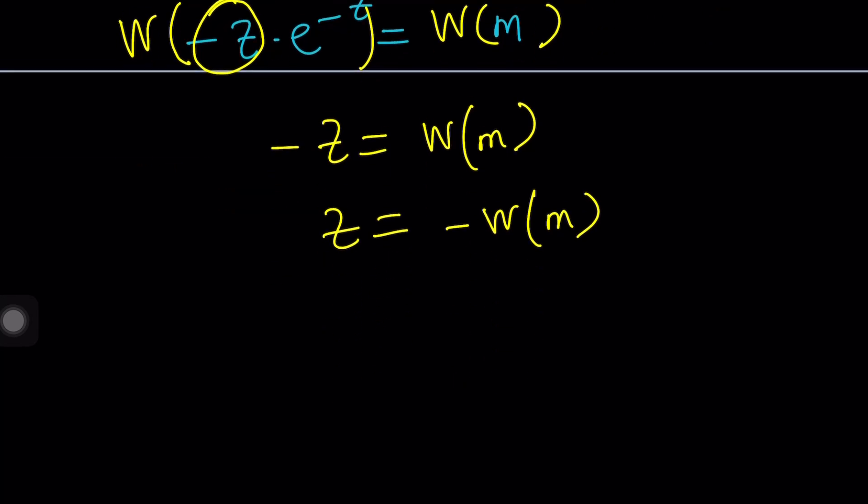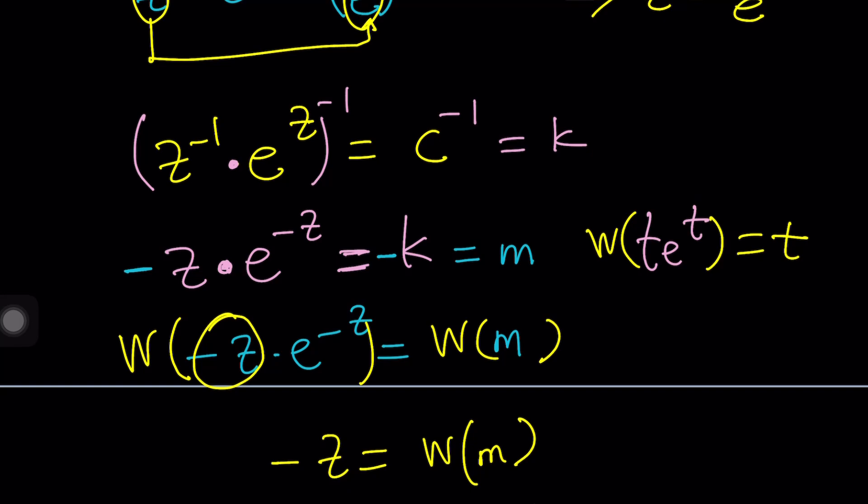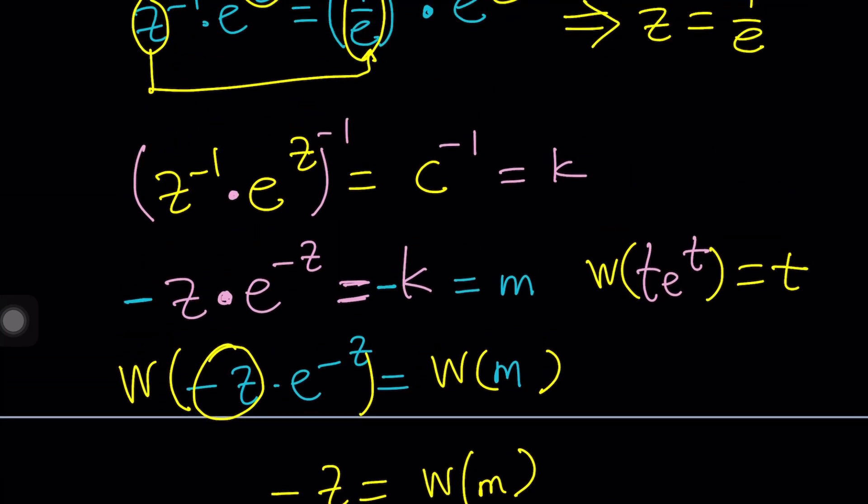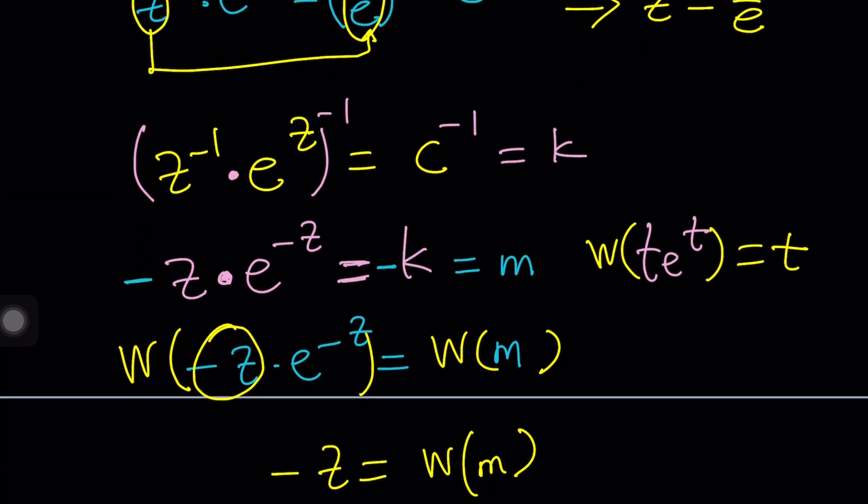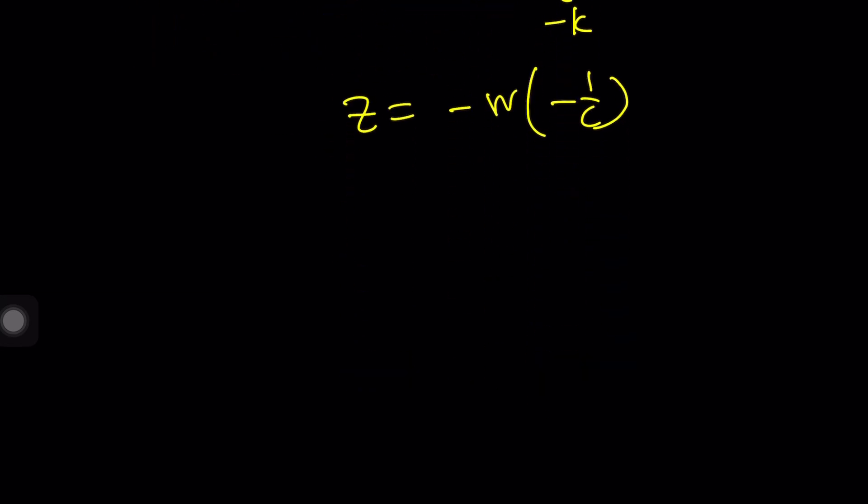But what is M? M is negative K. What is K? K is C to the power of negative 1 or 1 over C. So, this is negative 1 over C. But what is C? C is E to the power of something, something. Then, you can figure that out, right? A lot of substitutions, but you get the idea. So, I'm able to get Z even using Lambert's W function. And then, plug in whatever C is and hopefully get a numerical answer.